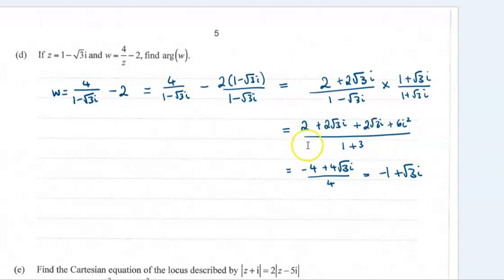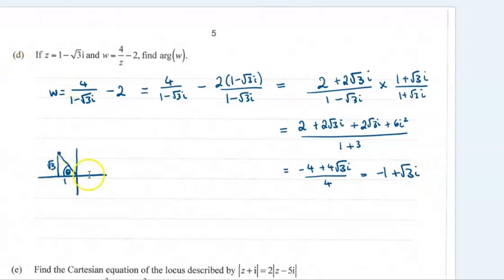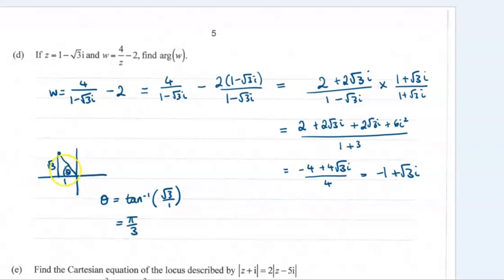I would not write this all out by hand — I have my calculator updated to show surds, and if you have a newer model it'll do it naturally. Finding the argument, we first need to plot it onto an Argand diagram — negative 1 in the x direction and plus root 3 in the y direction. That's one of your special triangles. Theta will be the inverse tan of root 3 over 1, which is pi by 3. So the argument is pi minus pi by 3, giving 2 pi by 3.